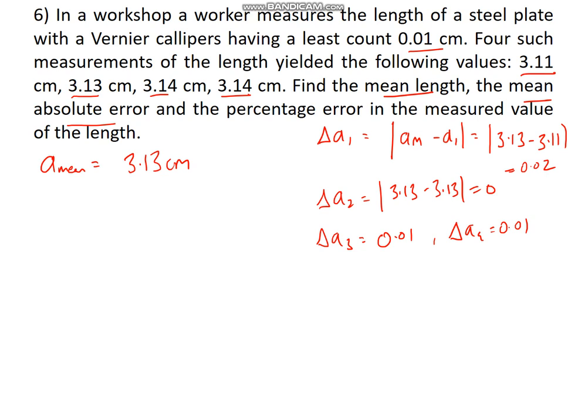Now we can take the average of this. When you take average of 0.02, 0, 0.01, 0.01, it should give you an average of 0.01. Again, you can calculate this.